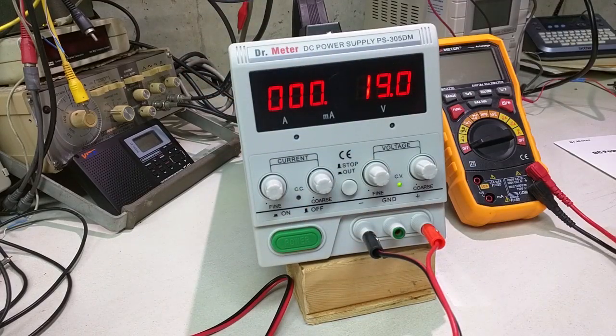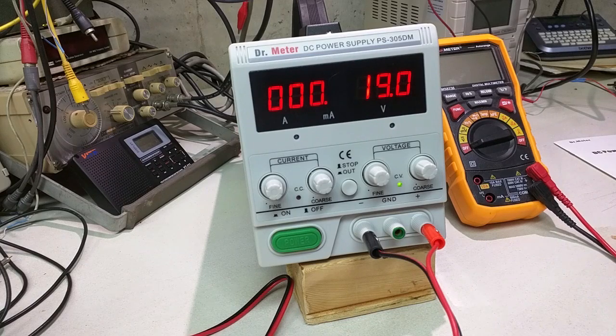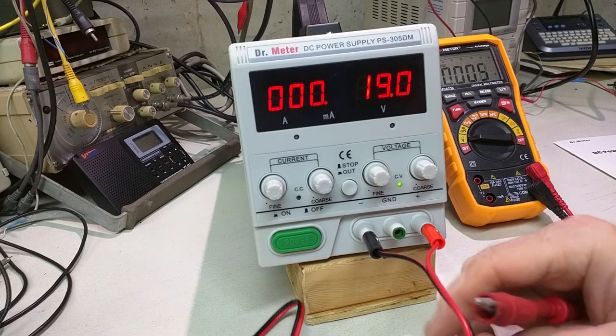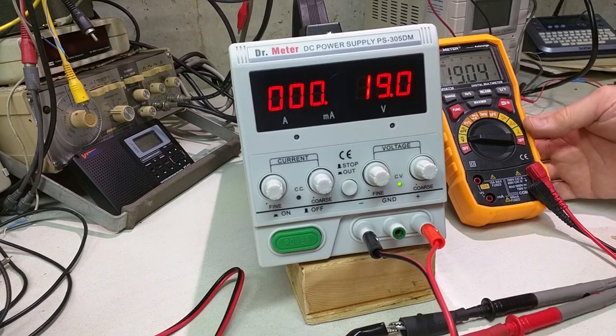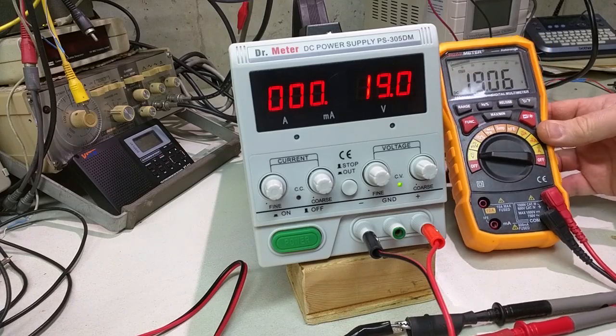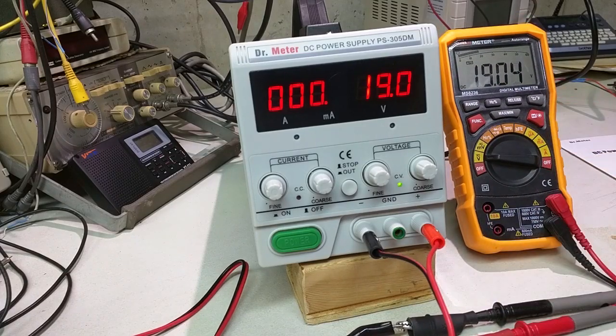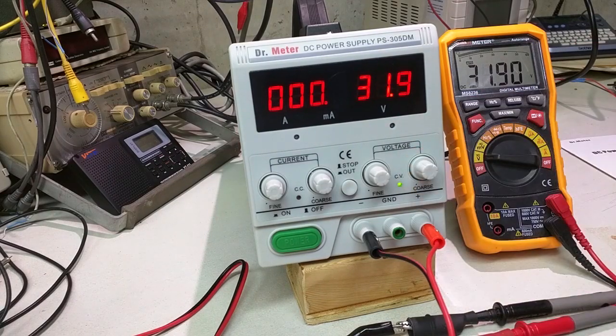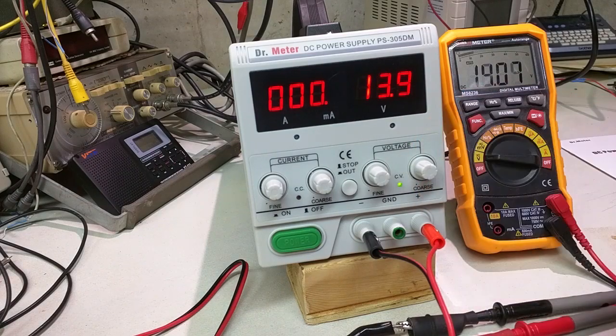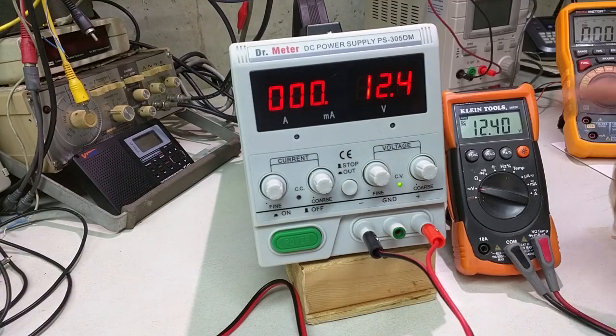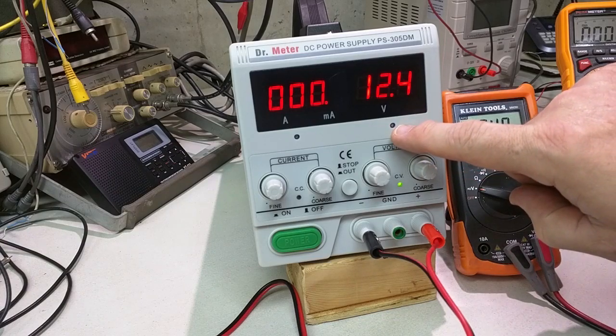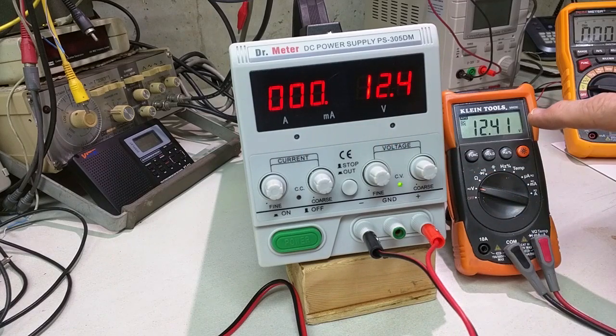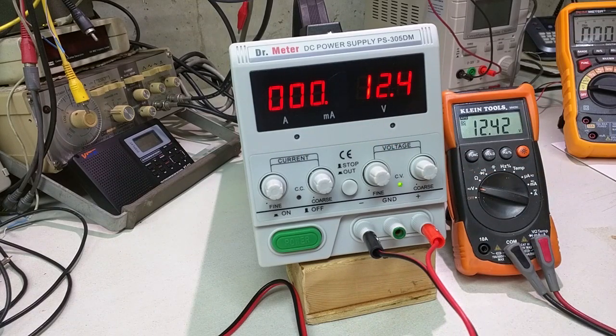Now I have some multimeters over here. So the first thing I want to do is I'm going to just put them on voltage and let's take a look at the voltage here. So this multimeter is showing 19 volts, 19.05, and I increase it to 31.9. So you can see it's tracking it quite nicely. If it was not tracking, you can adjust the output voltage right there to match what you're measuring. But I'm not going to do that because it doesn't look like it's necessary.